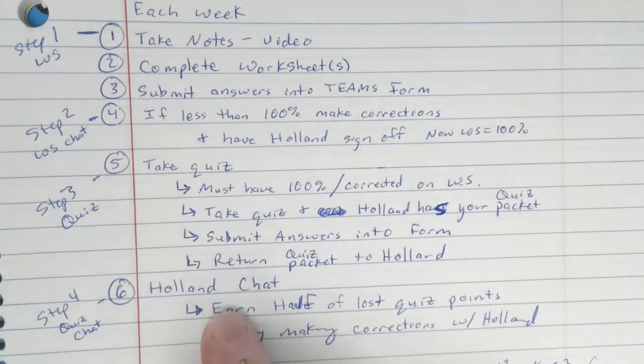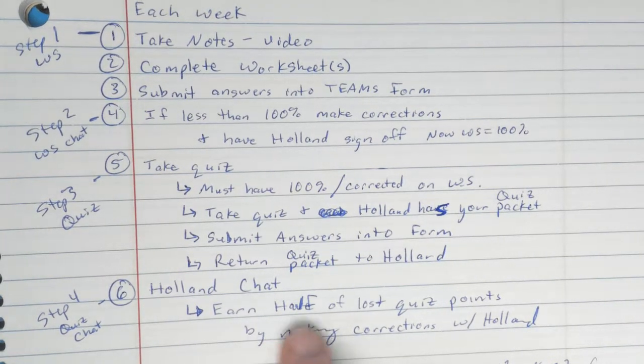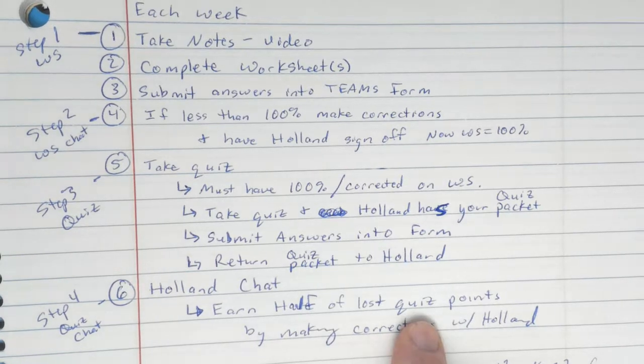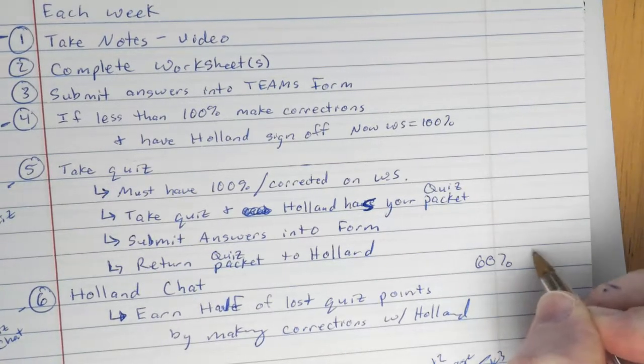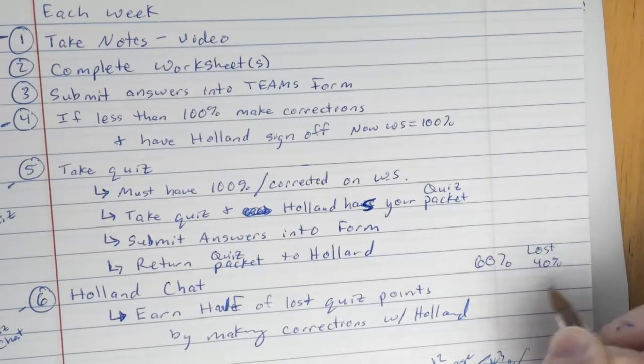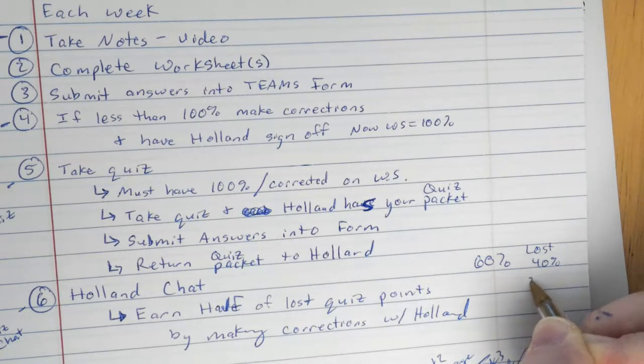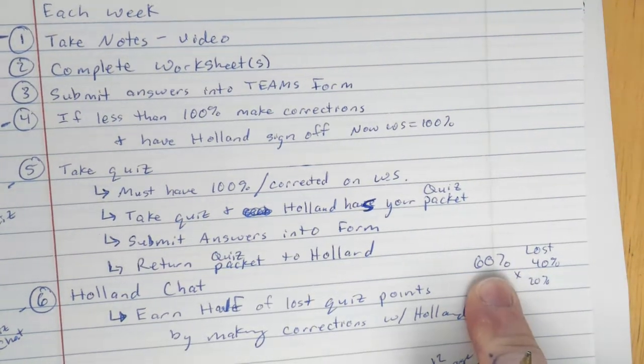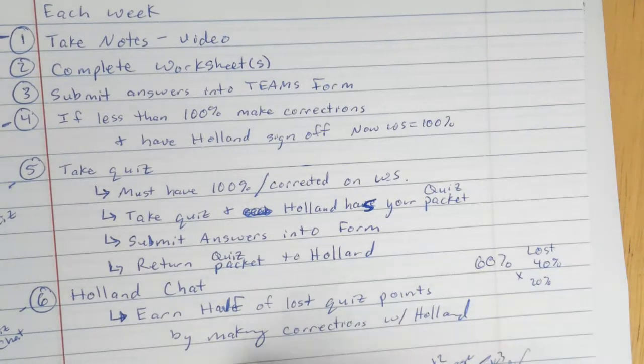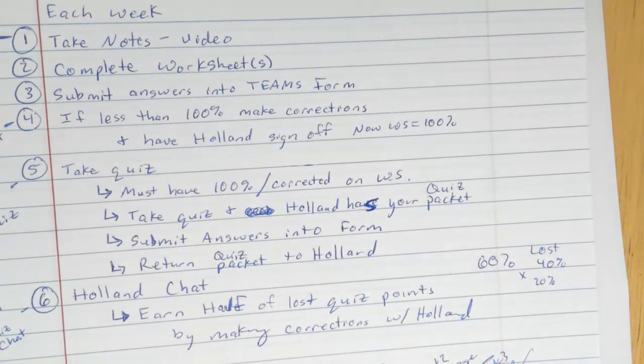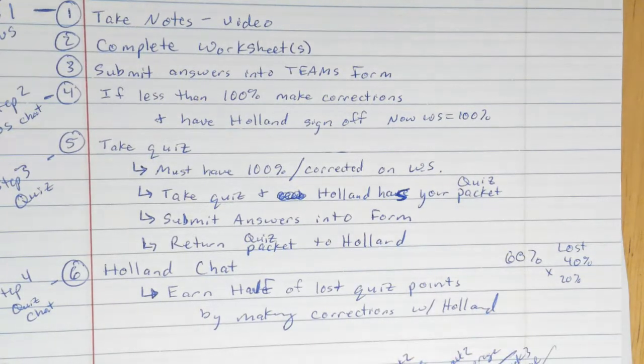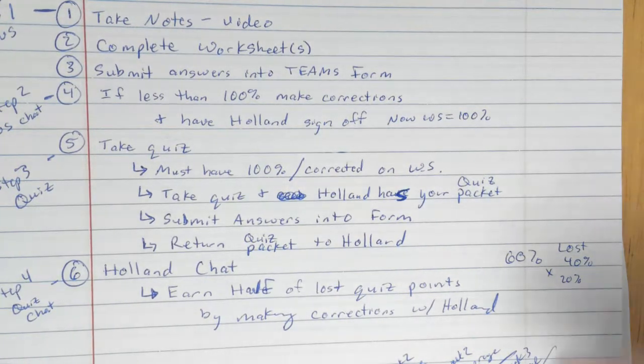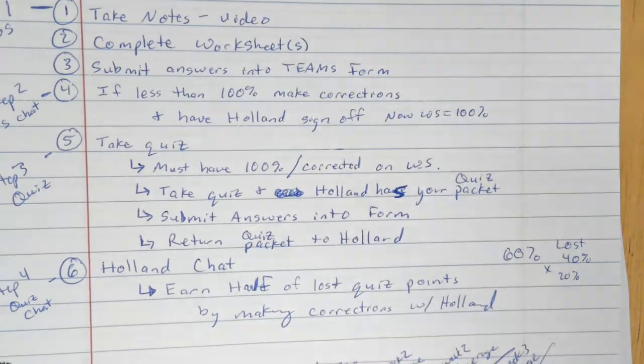Step number four is the quiz chat. You're going to chat with me about it so you can earn half of those lost points. For instance, if you got a 60% on your quiz, you lost 40%, you can gain back 20%. So you had a 60, you can turn that into an 80% after you talked to me and made those corrections with me. It's just like how we do the test boosters. And you only have one shot of doing the quiz. So make sure that you take your time to actually study because the more you get correct the first time, the more points you'll have.